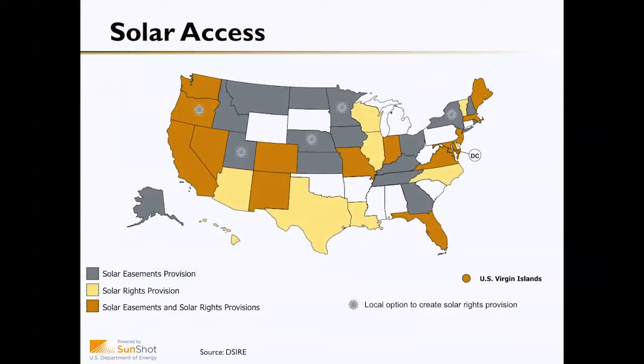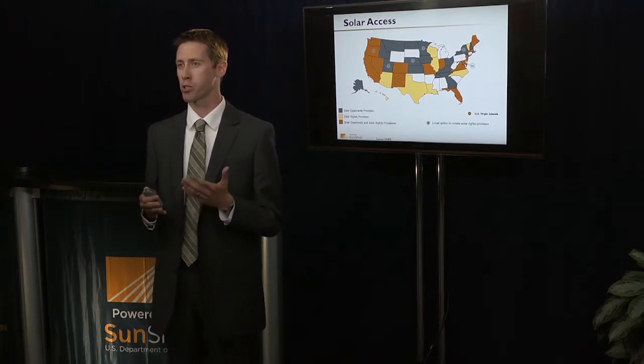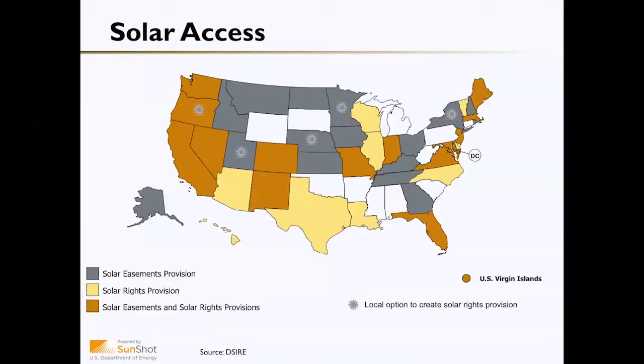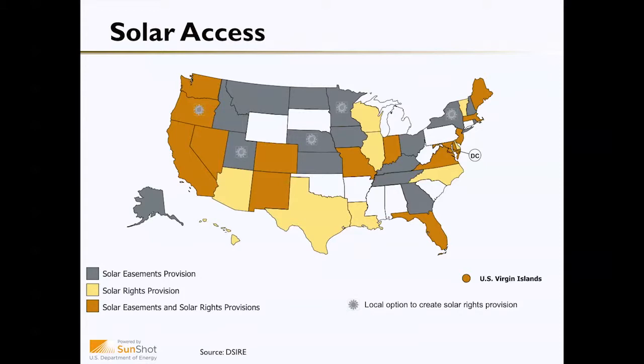A number of states have passed some form of solar access, solar rights, or solar easement provisions. Solar rights laws at the state level apply uniformly to all municipalities within the state. Solar easement provisions allow homeowners to negotiate agreements with their neighbors regarding access to sunlight or keeping vegetation trimmed. Importantly, some states have solar access provisions that allow municipalities to adopt the state standard, though a municipality may or may not have chosen to go through that process. It's important to check where your state stands. This map is from the Database of State Incentives for Renewables and Efficiency — DSIRE — and you should refer to that website for the latest updates.